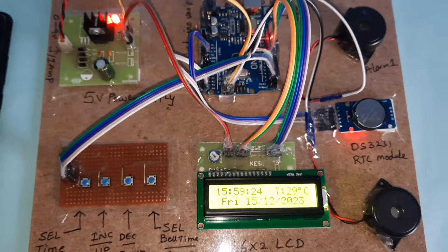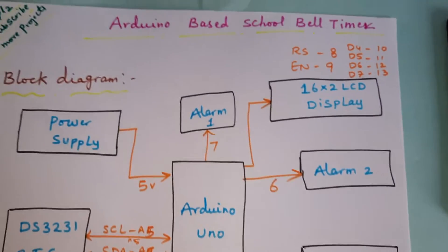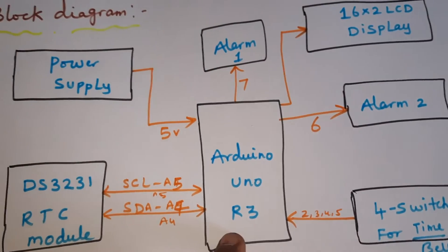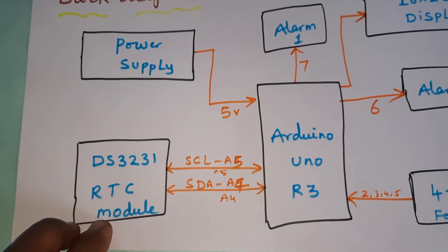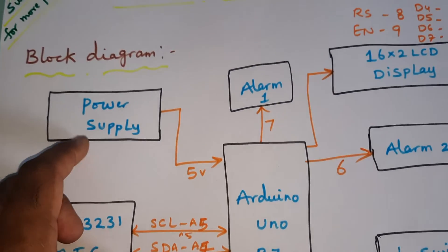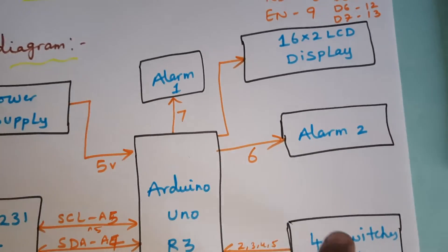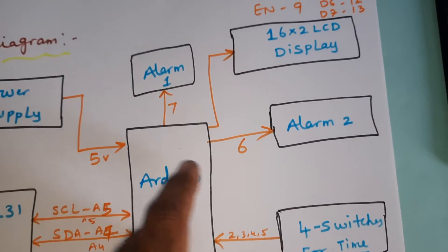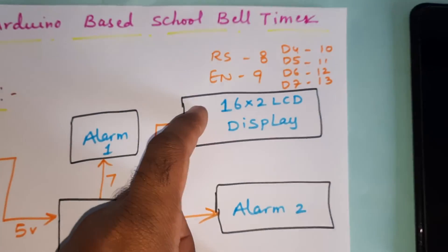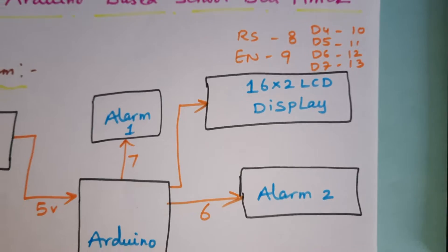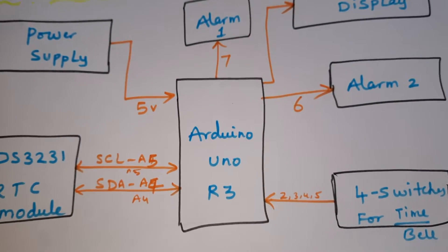The project title is Arduino-based school bell system. In this project we are using one Arduino UNO R3 board, DS3231 real-time clock module (RTC module), 5-volt power supply board, alarm one and alarm two — one for selecting the time for alarm and one is the main alarm school bell alarm — RS enabled D4, D5, D6, D7, a 16x2 LCD display, and four switch buttons: increment, decrement, select.